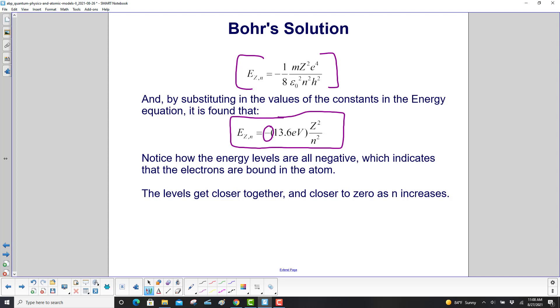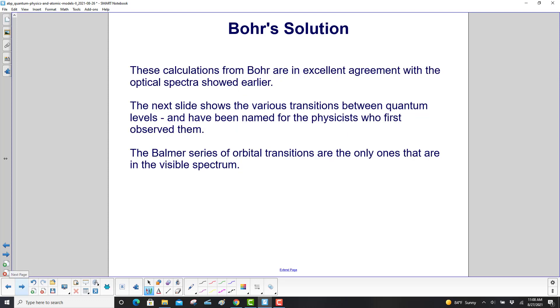The levels get closer together and closer to zero as n increases, because n's in the denominator there. The calculations from Bohr are in excellent agreement with the optical spectra showed earlier, which was explained by people like Rydberg. That still fascinates me. This was done in the late 1800s by Rydberg and Lyman and Paschen, and they just found an equation that matched with the data. Now Bohr actually comes up with an explanation, a theory, as to why this works.